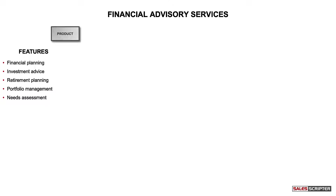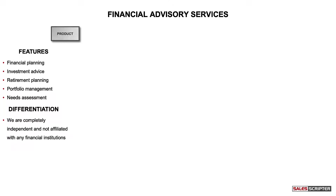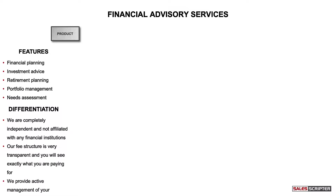After you outline what you provide, take that one step further and think about how what you provide is different from your competition — how are you different from other financial advisors? This can be difficult, especially if you are a financial advisor, because a lot of what you do is very similar to others. Here are some things I came up with with this client: we're completely independent and not affiliated with any financial institutions; our fee structure is very transparent and you will see exactly what you're paying for; and we provide active management of your investments and savings.